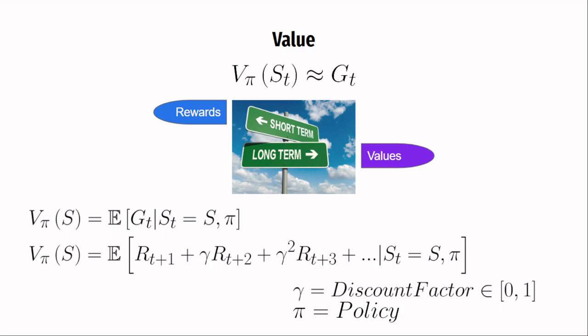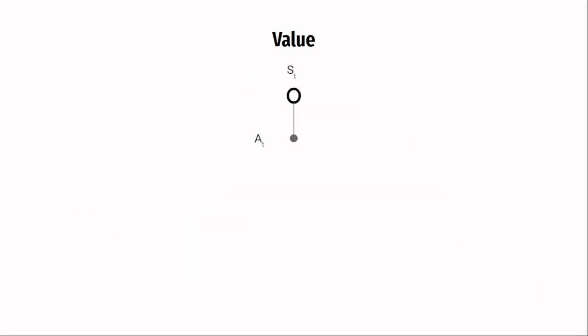But the main question is, why is there an expectation in the equation? Why can the value not be equal to the return? Well, when an agent is about to take an action, if the environment is deterministic, which means that if you are sure that taking action a on state st will lead to state st plus 1, then there is no problem in making the value function equal to the return.